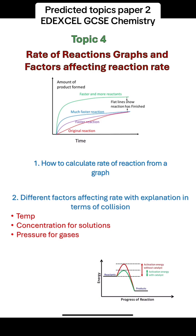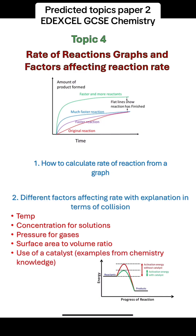Pressure in the case of gases works the same as concentration. An increase in the surface area to volume ratio will also increase the frequency of collisions. Finally, the use of a catalyst provides an alternative pathway for the reaction with a lowered activation energy. You should be able to show the lowered activation energy when a catalyst is used, and you should know that a catalyst speeds up the reaction without being used up, along with some examples of catalysts.